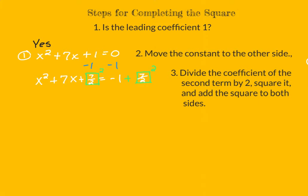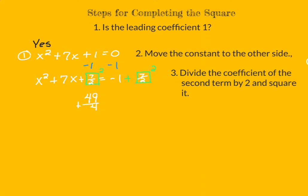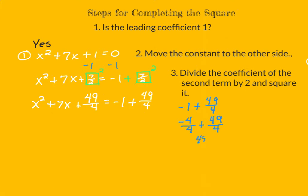This looks complicated, but by writing it in those boxes, it will make the last steps of this process easier. Now that I have divided the coefficient of the second term by 2, I'm going to square it: 7 over 2 squared gives me 49 fourths. So I still have x squared plus 7x plus 49 fourths on the left, and on the right I have negative 1 plus 49 fourths. Converting negative 1 to negative 4 over 4 and adding 49 fourths, I get 45 fourths on the right-hand side.